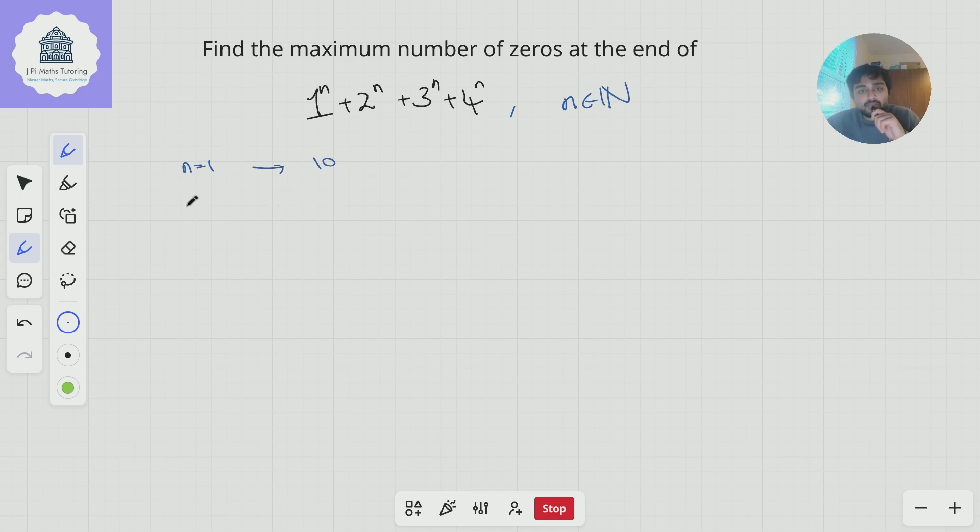Can we do 2 zeros? Let's try n=2: 1² + 2² + 3² + 4². That's 1 + 4 + 9 + 16, which equals 30. That ends in one zero as well.